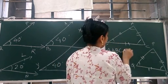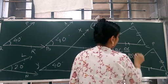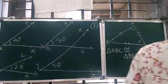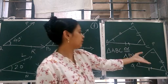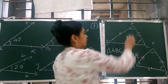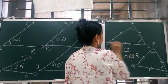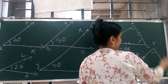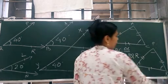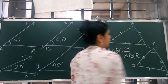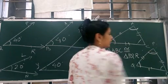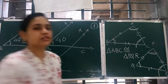When triangle ABC is congruent to triangle PQR, we have corresponding vertices, corresponding sides, and corresponding angles. A and P are corresponding vertices, B and Q are corresponding vertices, and C and R are corresponding vertices. Side AB and side PQ are corresponding sides; side BC and side QR are corresponding sides; side AC and side PR are corresponding sides. Angle A and angle P are corresponding angles; angle B and angle Q are corresponding angles; and angle C and angle R are corresponding angles.